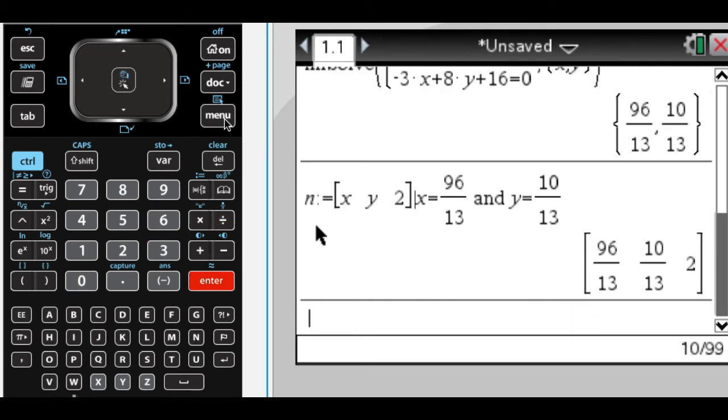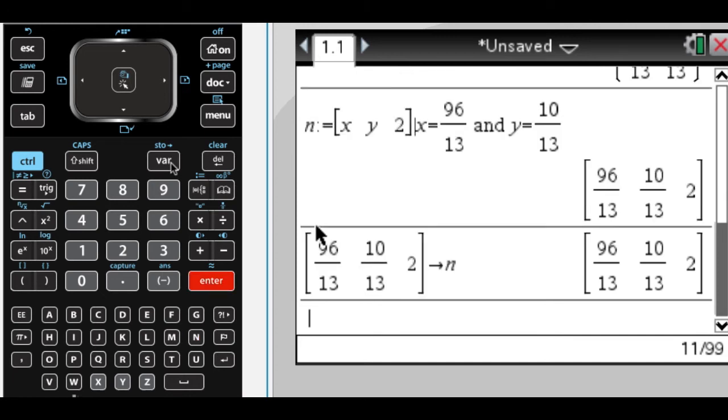So that now I'm going to store as N. What I'm doing here is I'm storing backwards. Equal colon actually will do that, but you can do control store. I'm going to store that as my value of N now.